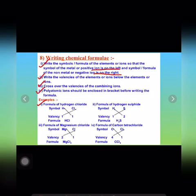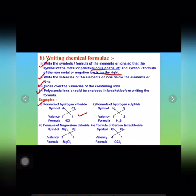Let us first talk about HCl — hydrogen chloride — and how this formula is written. First we have to write the symbols of the atoms. We are talking about hydrogen and chloride. After writing the symbols, their valences are placed just below them, as shown here.